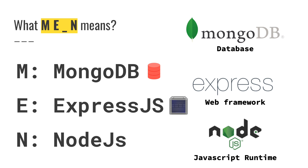MEN stands for M for MongoDB, E for Express, and N for Node.js. MongoDB is a NoSQL database — it is a document-oriented database used for keeping data. If you want to know how to work with MongoDB, you can watch my video that is linked above. Express.js is a minimalistic web framework built on Node.js, used as a server which queries your database and handles requests coming from the client side, that is the front end.